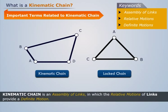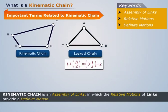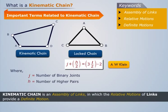Let us now understand how to determine whether a chain is a locked chain or a kinematic chain by using the formula given by AWKline, where J is the number of binary joints, H the number of higher pairs, and L the number of links. After substituting the respective values in this formula.